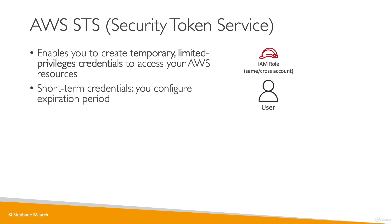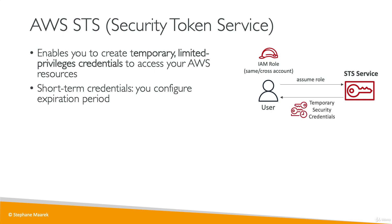For example, a user has access to a role and they want to leverage that role. What happens is that it's going to assume the role using an STS API call. It will talk to the STS service, and the result of this API call will be STS sending back some temporary security credentials — they look just like an access key, a secret access key, as well as a session token, which is going to be limited in time. Using these three credentials, we access our AWS resources using the role we just assumed.